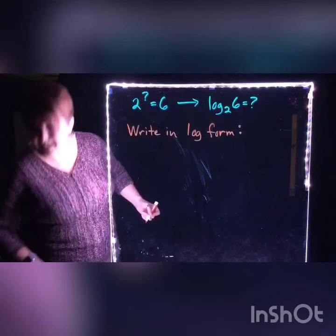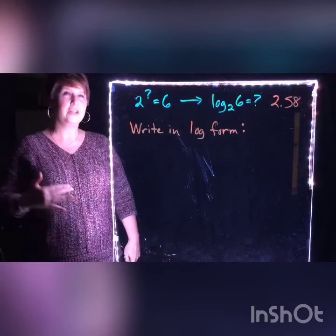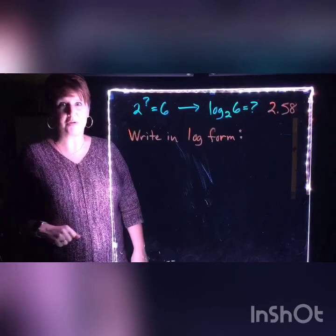You guys are slow — come on, what do you get? 2.58. So if you guessed 2.5, you really weren't that far off. But again, because it's exponential and not linear, it's a little bit different. You can see how we can find our mysterious exponents using logarithms.